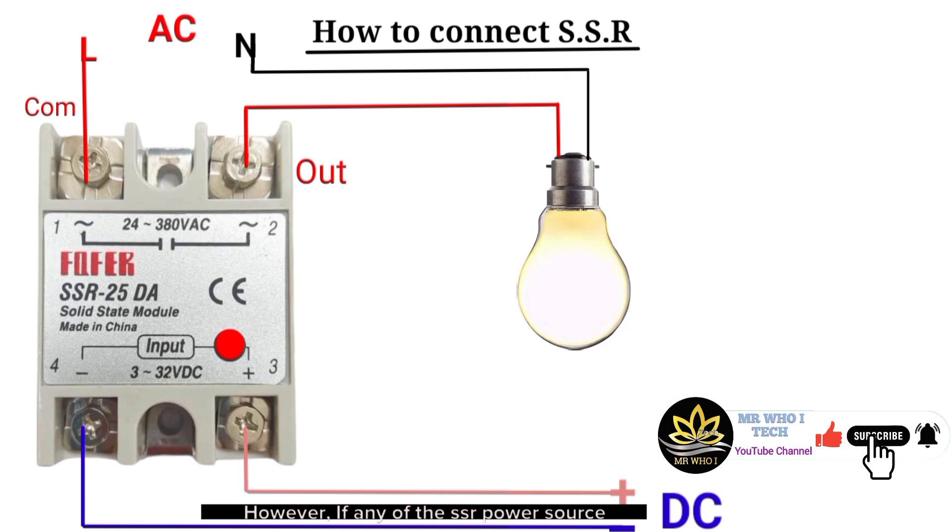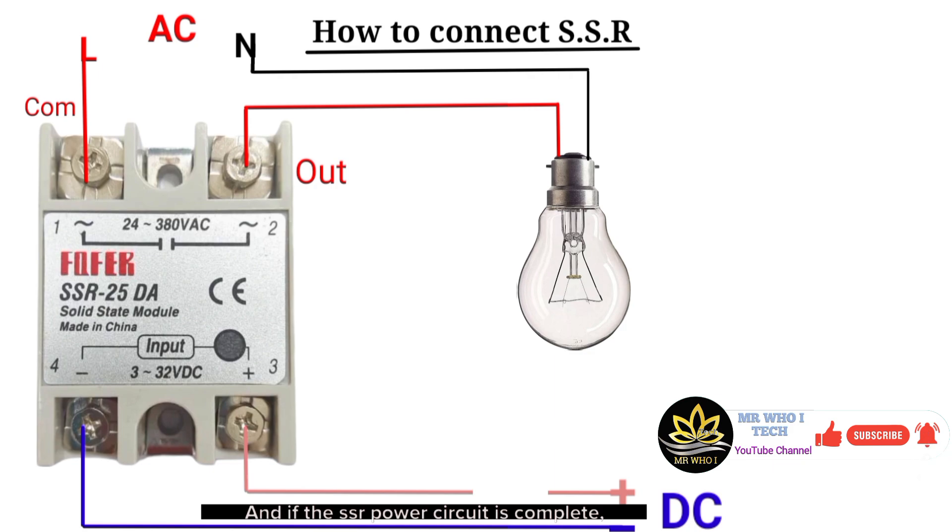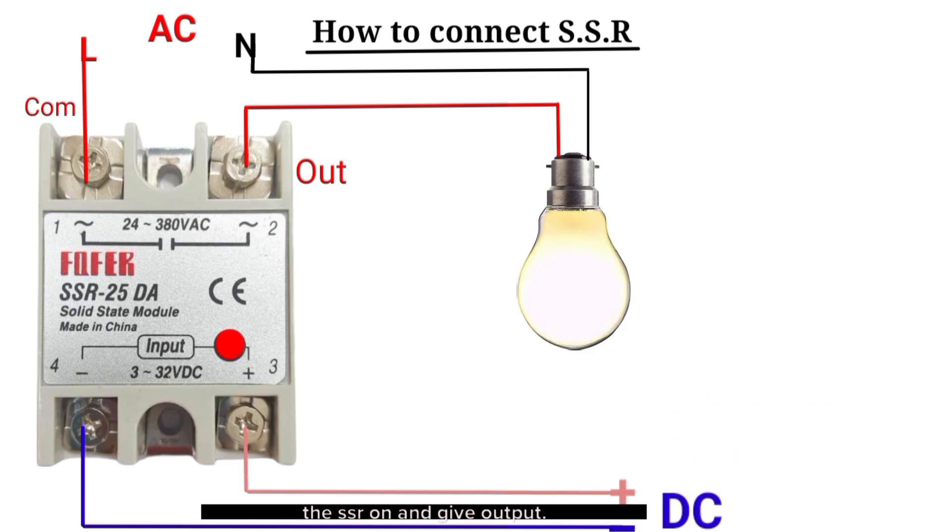However, if any of the SSR power source breaks, the SSR turns off and has no output to supply. And if the SSR power circuit is complete, the SSR turns on and gives output.